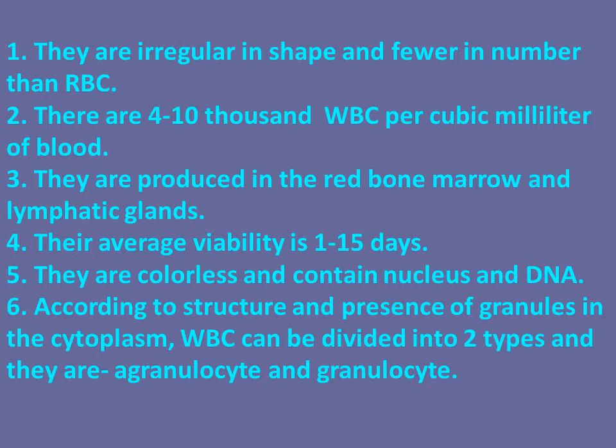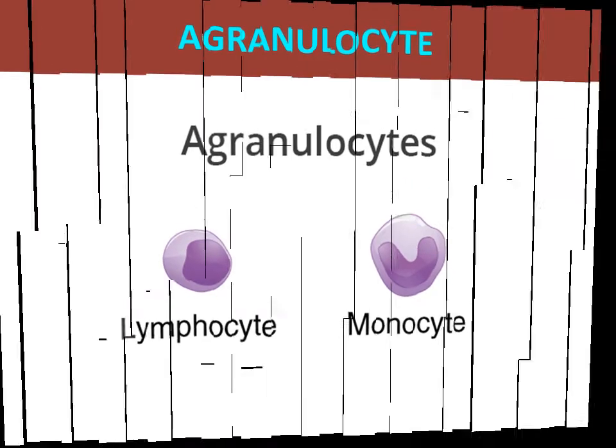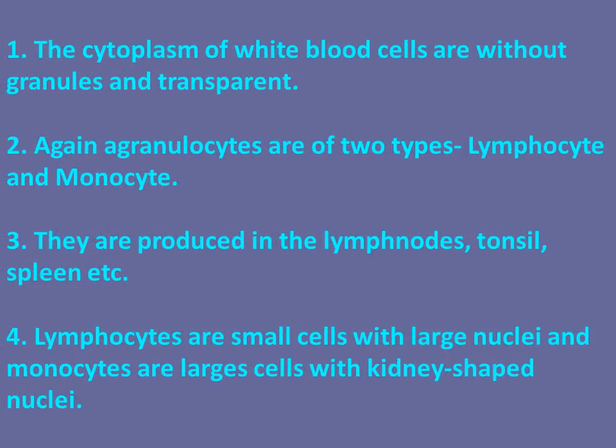According to structure and presence of granules in the cytoplasm, white blood cells can be divided into two types: agranulocytes and granulocytes. Agranulocytes have cytoplasm without granules and are transparent. Agranulocytes are of two types: lymphocytes and monocytes. They are produced in the lymph nodes, tonsils, and spleen. Lymphocytes are small cells with large nuclei, and monocytes are larger cells with kidney-shaped nuclei.